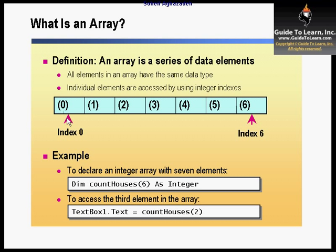If I have an array declared with a value of 6, I've declared a variable as type integer as an array using parentheses with the number of elements I want. Specifying 6 will give me seven different elements — so declaring an integer array with 'CountHouses(6) As Integer' gives me seven elements. I can refer to a particular element by its index — for example, 'TextBox1.Text = CountHouses(2)' gives me the third element, since arrays are zero-based.